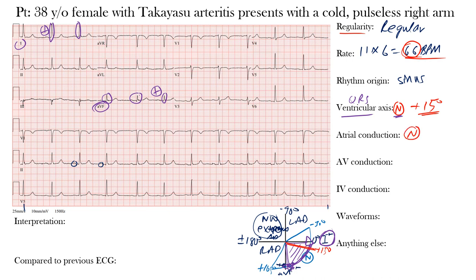For atrioventricular (AV) conduction, we look for conduction delays as the impulse travels between the atria and ventricles, since the majority of the PR interval represents AV nodal conduction. The normal PR interval in adults is between 120 and 200 milliseconds — three to five small boxes. In this case it appears normal. The EKG machine estimated it at 190 milliseconds, confirming a normal PR interval.